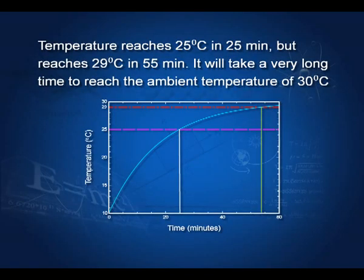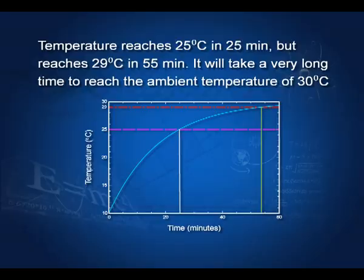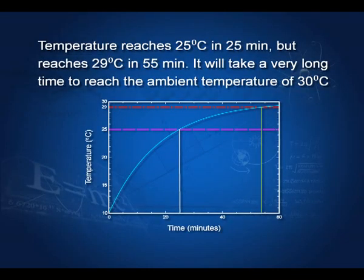The temperature rise is shown on this graph — it is again an exponential curve. The 30 degrees line is at the top and that temperature is reached only after a very long time. At 29 degrees this temperature is reached after about 55 minutes, and 25 degrees in 25 minutes. From this curve I can find out the temperatures at various times or how long the body will take to acquire a given temperature. Note that the ambient temperature is never really reached — it takes a very long time.